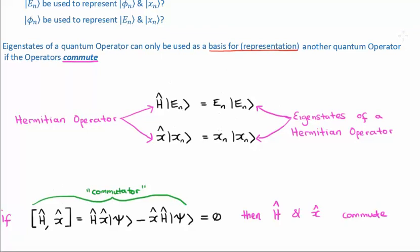Eigenstates of a quantum operator can be used to form a basis or representation for another quantum operator if the operators commute. Position and energy operators commute, meaning we can use position eigenstates as a basis for the energy eigenstates — in fact they are the same thing. The phrase we use is that we can have simultaneous eigenstates for both the momentum and the energy operator. It is slightly more difficult with the Hamiltonian and the position operators because we need to take the expectation value, but the point still stands.